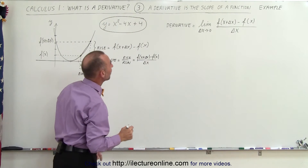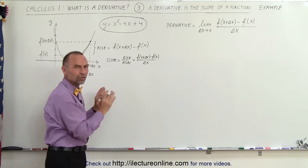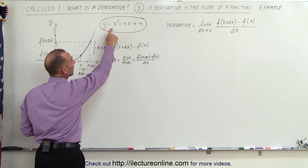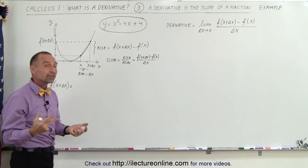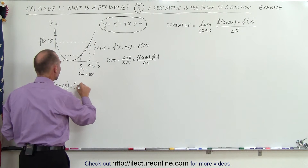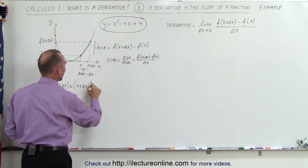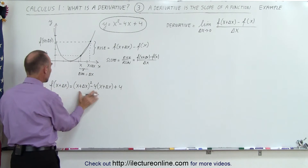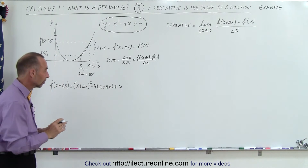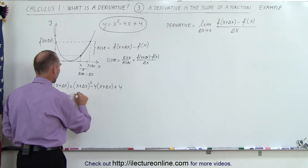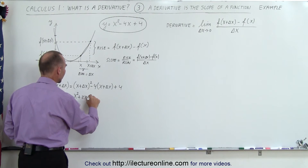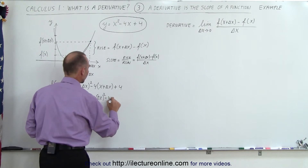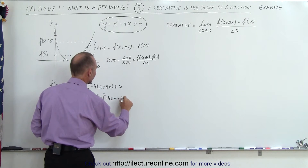Let's go ahead and do that now, realizing our function is defined right here. The first thing we want to do is find f of x plus delta x. So f of x plus delta x is simply the function evaluated by replacing every x with x plus delta x. This gives us the quantity x plus delta x, squared, minus 4 times x plus delta x, plus 4. Working this out, we get x squared plus 2x times delta x plus delta x squared minus 4x minus 4 times delta x plus 4.